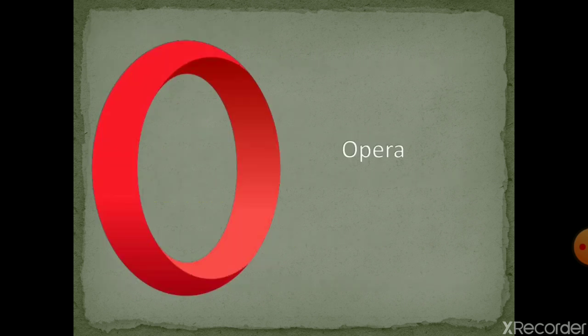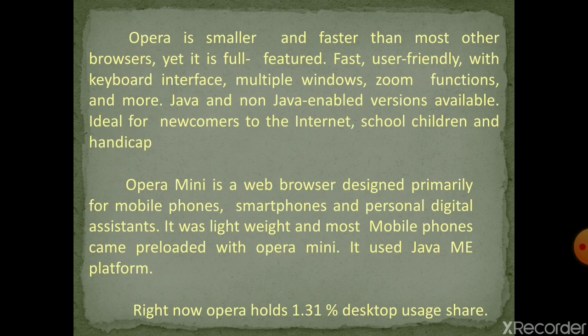The other web browser is Opera, developed by Opera Software — a Norwegian software company. Opera runs on a variety of personal computer operating systems including Microsoft Windows, Mac OS, and Linux. Opera is smaller and faster than most other browsers, yet it is full-featured and user-friendly, with keyboard interface, multiple windows, zoom functions, and more. Java and non-Java enabled versions are also available.